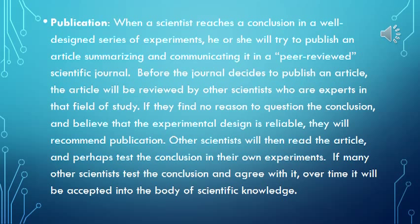When a scientist reaches a conclusion in a well-designed series of experiments, he or she will try to publish an article summarizing and communicating it in a peer-reviewed scientific journal. Before publication, the article is reviewed by other scientists who are experts in that field. If they find no reason to question the conclusion and believe the experimental design is reliable, they recommend publication. Other scientists will then read the article and perhaps test the conclusion in their own experiments. If many scientists test and agree with the conclusion, over time it will be accepted into the body of scientific knowledge.